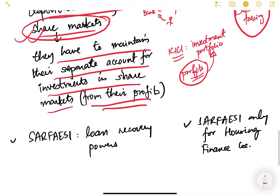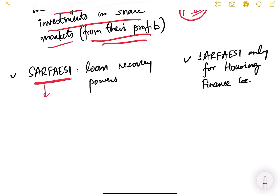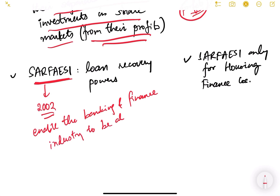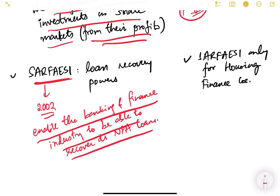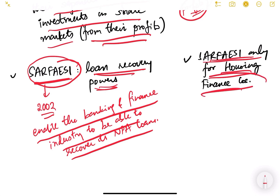The SARFAESI Act of 2002 was passed to enable the banking and finance industry to recover NPA (non-performing asset) loans. If people have taken loans and are not paying back, banks can use this act to carry out loan recovery. Every kind of bank has access to SARFAESI powers. For NBFCs, however, SARFAESI is available only to housing finance companies and not to other types of NBFCs.